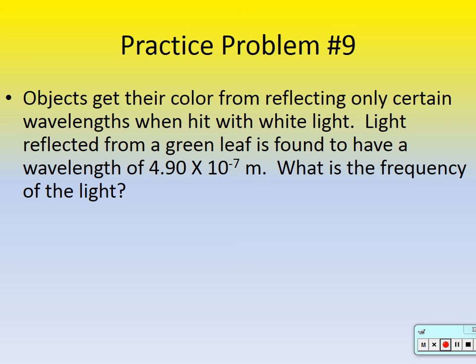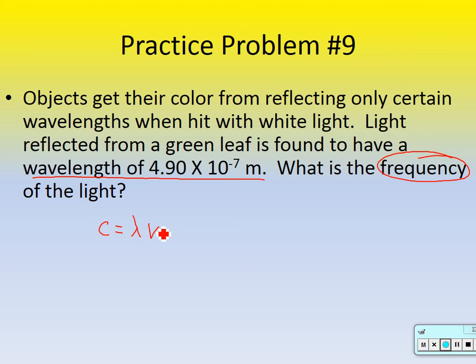Light reflected from a green leaf is found to have a wavelength of 4.9 times 10 to the minus 7th meters. What is the frequency of the light? Circle frequency — that's what we're solving for. Is there an equation with frequency and wavelength in it? Yes: C equals wavelength times frequency. Plug in your variables and see if you can find the frequency.